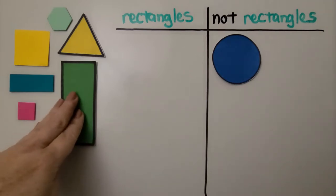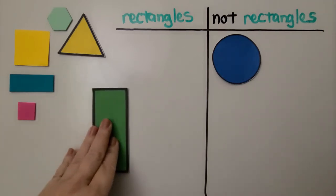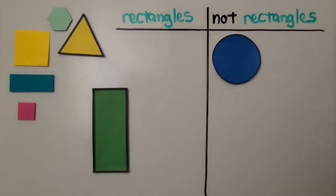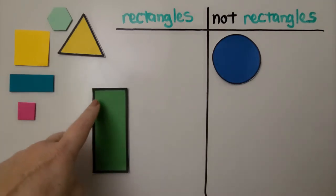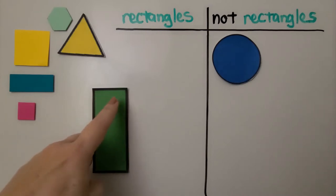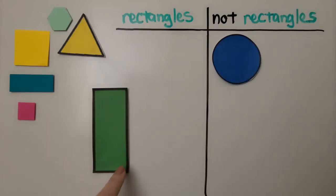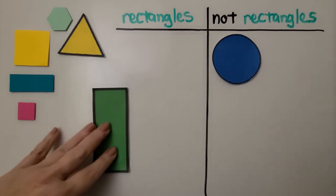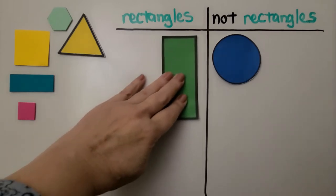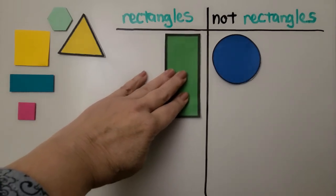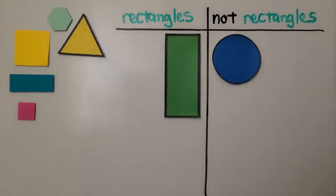Does this have four square corners? I see one, two, three, four square corners. So yes, that is considered a rectangle. We can put it in the rectangle set.